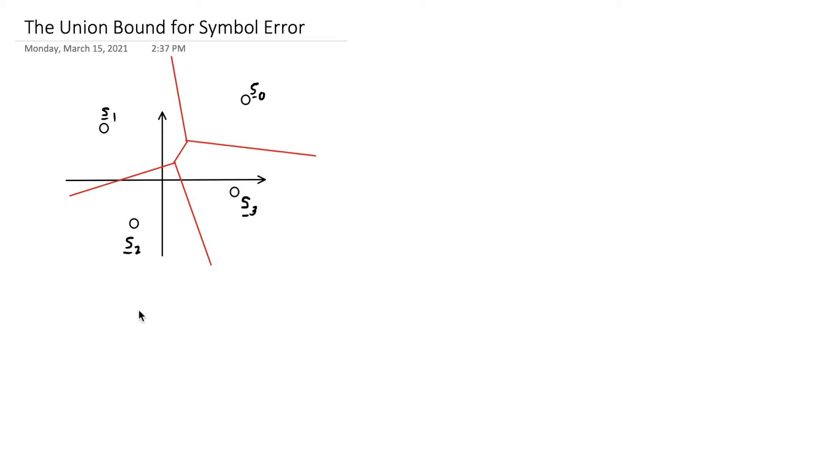This is Neil Patwari. In this segment I'm going to apply the union bound to come up with an expression for the probability of symbol error in an arbitrary constellation. Here I drew a fake constellation to emphasize the points you need to know for the union bound.